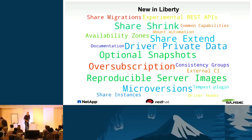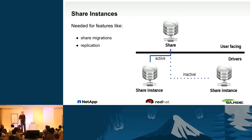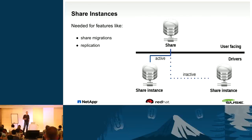In Liberty we implemented a lot of different features. First, share instances — a feature needed for share migrations and replication. This is admin-facing only; end users don't see anything. When you migrate a share using share instances, the UUID visible to the end user doesn't change, even if you migrate or use another replication for that share.